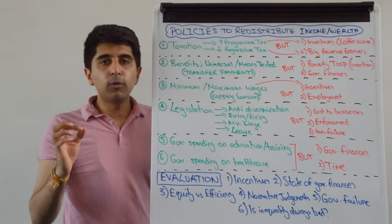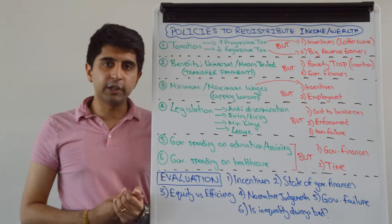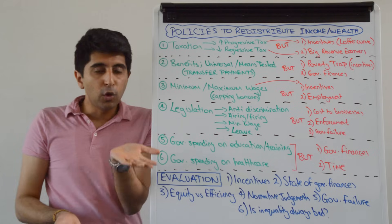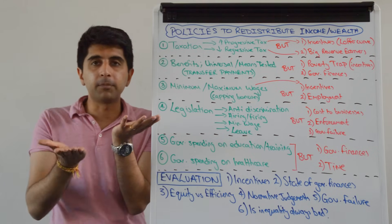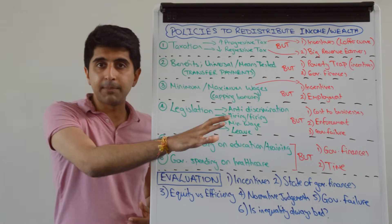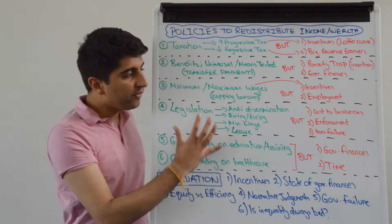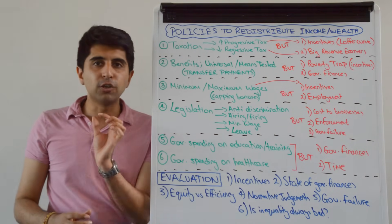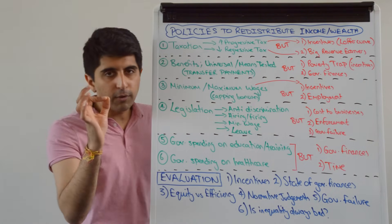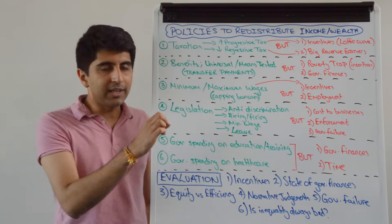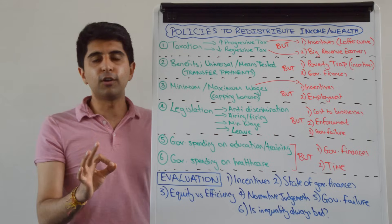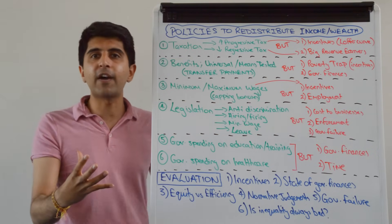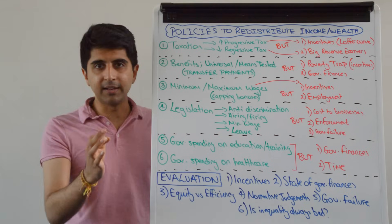Don't forget that income and wealth are mutually reinforcing concepts. So with high income you expect high wealth, and with high wealth you expect high incomes — the two come together, as covered in my previous video. So all of these policies can be argued to help redistribute income and wealth. A key thing to take away right now is that government intervention here is a normative consideration based on equity, based on fairness or unfair outcomes that free labour markets can bring.